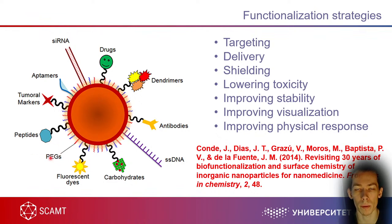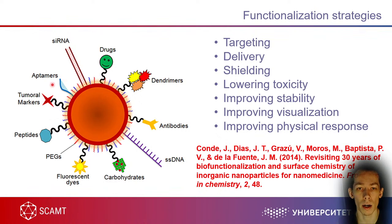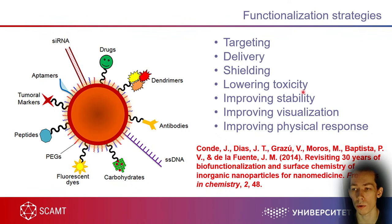Targeting moieties are added to visualize particles when they accumulate in tumors or on blood clots. Also very important are peptides and polymers — polyethylene glycol (PEG) is one of the most used polymers in functionalization, mainly used for shielding: it shields particles from plasma proteins and absorption by macrophages and Kupffer cells. There are also tumor markers, aptamers, and dendrimers used for improving stability.